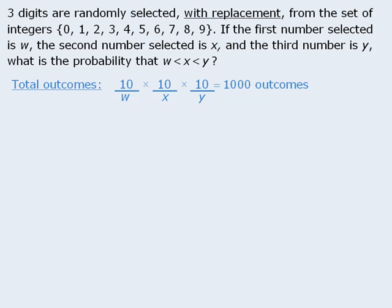First we should recognize that in order for the second number to be greater than the first number and the third number to be greater than the second number, all three numbers must be different. So let's determine the number of ways we can select three numbers such that they are all different.